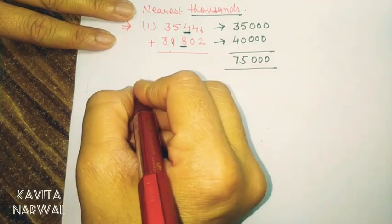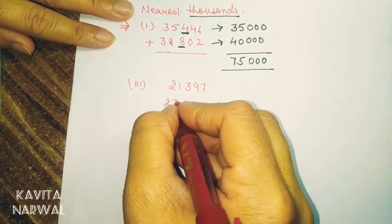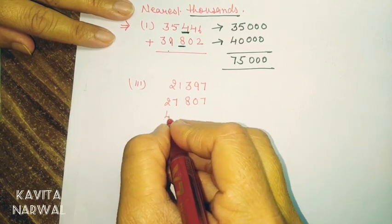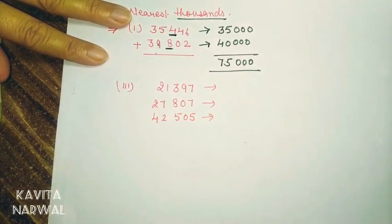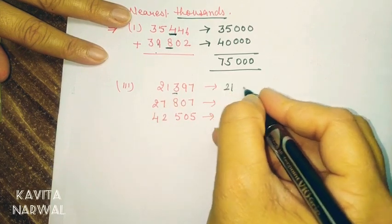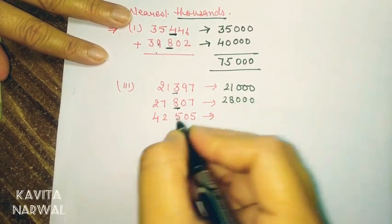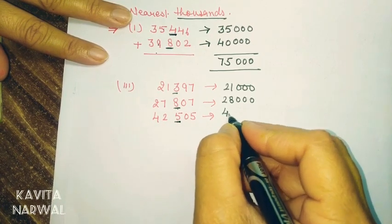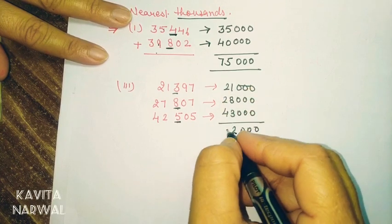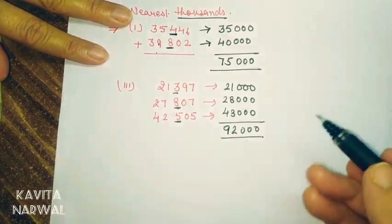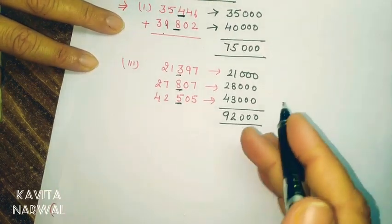Third part of question 3: 21,397 plus 27,807 plus 42,505. For 21,397, hundreds digit is 3 — round off is 21,000. For 27,807, hundreds digit is 8 — add 1, giving 28,000. For 42,505, hundreds digit is 5 — add 1, giving 43,000. Their estimated sum is 92,000.